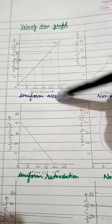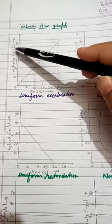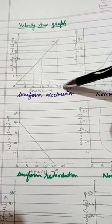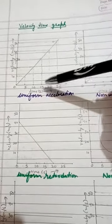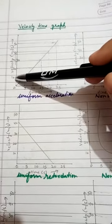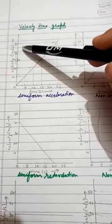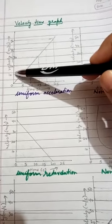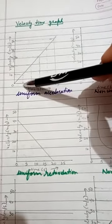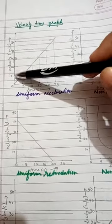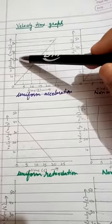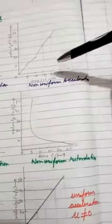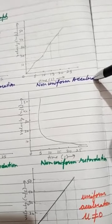The first graph is for uniform acceleration. On the y-axis we plot velocity with its SI units, and on the x-axis we plot time with its units. Here the time interval shown is 5, 10, 15, 20, 25 seconds and velocity shown is 10, 20, 30, 40, 50 m/s. The body increases velocity by 10 m/s every 5 seconds, so when you make the graph it will be a straight line. For uniform acceleration you get a straight line.